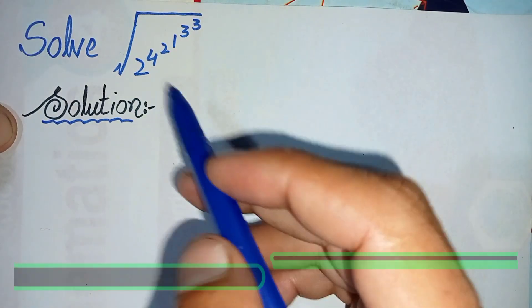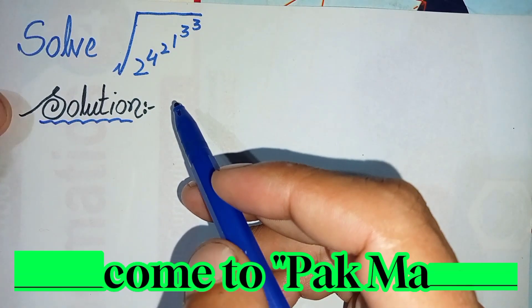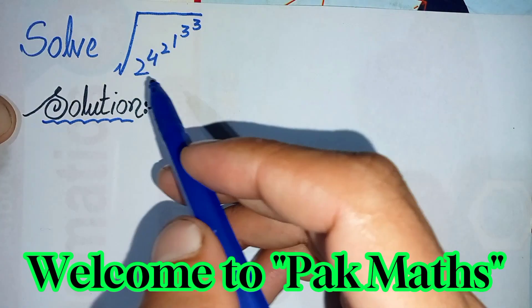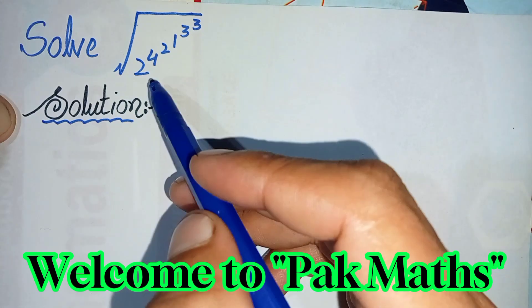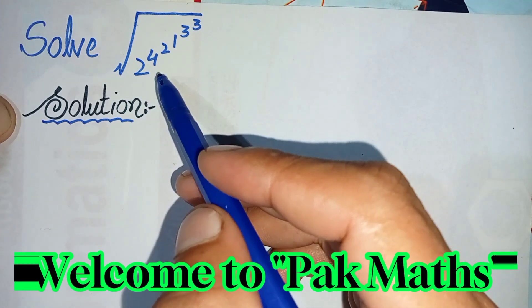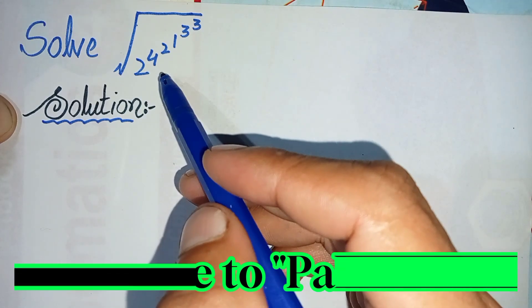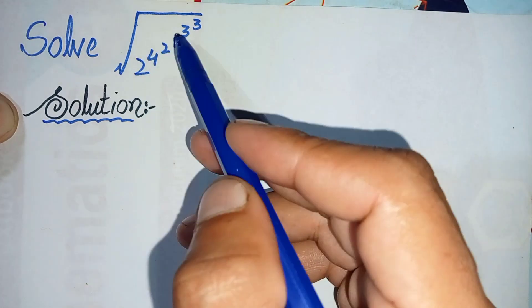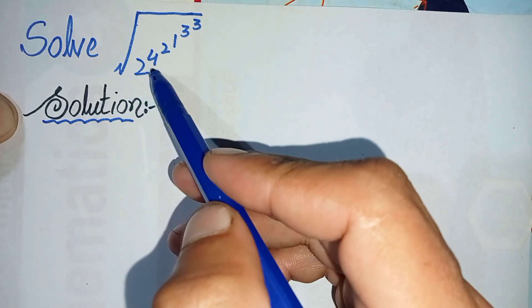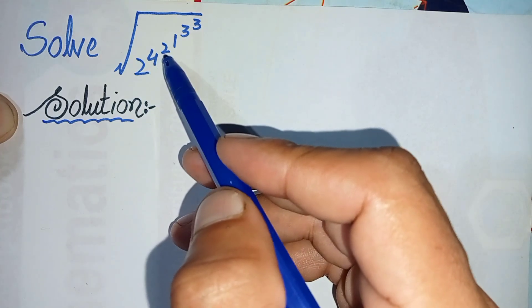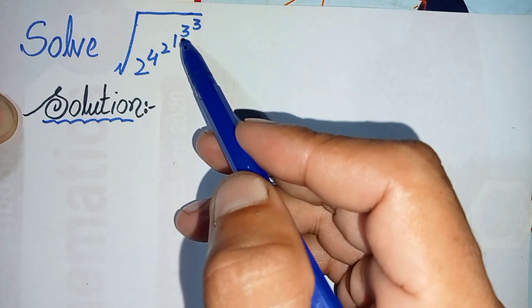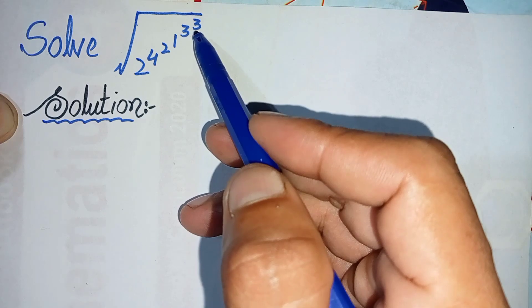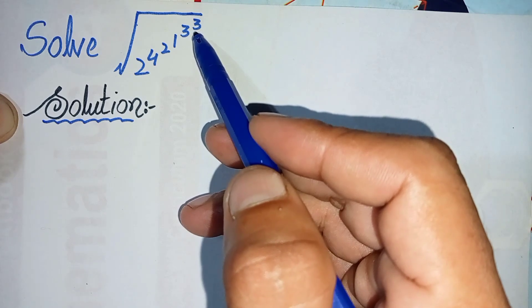Hello everyone, welcome to Parkmas. In this video I'm going to solve this nice and interesting square root math problem: the square root of 2 raised to power 4, raised to power 2, raised to power 1, raised to power 3, and raised to power 3.